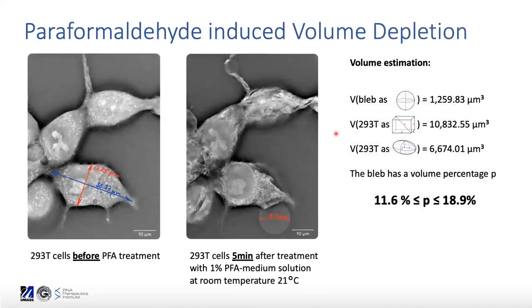The next slide shows fixation with paraformaldehyde where I computed the volume of cells and the volume of the blebs shown, estimating that in this case the blebs have a volume percentage between 11 and 19 percent of the cell. I have to admit that's an extreme case, even though I used just 1% paraformaldehyde added to the medium. Since paraformaldehyde or formaldehyde will sink to the bottom, the actual concentration at the cells will be much higher than that 1%.